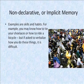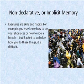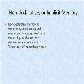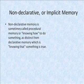Your non-declarative or implicit memory allows for skills and habits. For example, you may know how to tie your shoelaces or how to ride a bicycle using implicit memory, but if asked to verbalize how you do these things, it is difficult. Non-declarative memory is sometimes called procedural memory, or knowing how to do something, as distinct from declarative memory which is knowing that something is true.